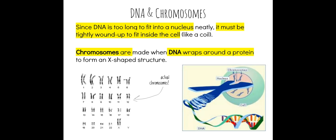Since DNA is too long to fit into a nucleus neatly — six feet of DNA is big — it has to be tightly wound up to fit inside the cell, kind of like a coil. You can think of old-timey corded telephones with the cord wrapped into a coil, or curly hair that's really short when curled and longer when straightened out. So DNA has to be curled up into a coil to fit inside the nucleus of the cell.